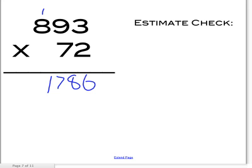What is 7 times 3? 21! So where would you put the 1? You would put the 1 in the ones place and carry the 2 above the next number. What's 7 times 9? 63, plus 2 is 65. You put the 5 right there, then put the 6 above the 8. And the last one — 7 times 8 equals 56, plus 6 is 62.